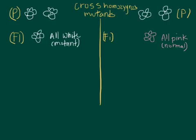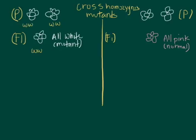Depending on what result I get, this tells me something. If we take the first cross on the left, where we got back all white offspring for the first generation — all mutant for the first generation — we can explain this by the following: our parents were both mutant, they were homozygous mutant. So if they were both homozygous mutant and mutant in the same gene — we're going to call it the W gene — then obviously all the offspring from this parental cross would be mutant. That's the only possibility. So that's if they are both mutant in the same gene, the W gene.